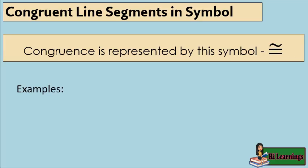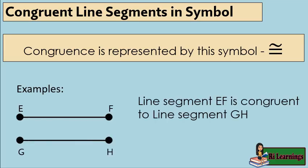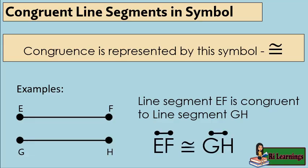Congruent example: Line segment EF is congruent to line segment GH. We can write it in symbol in this way — line segment EF is congruent to line segment GH.